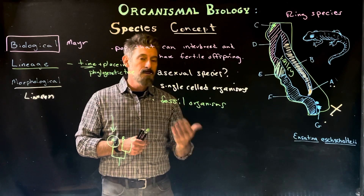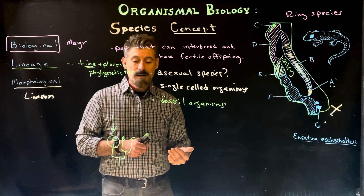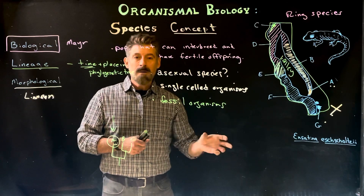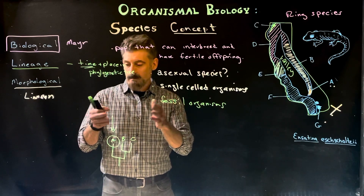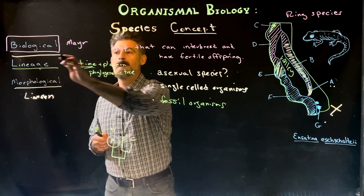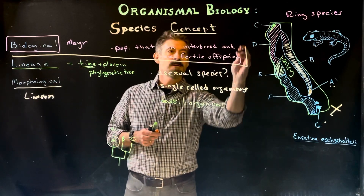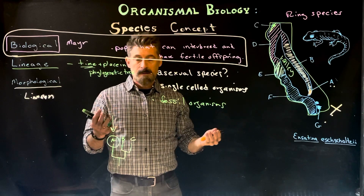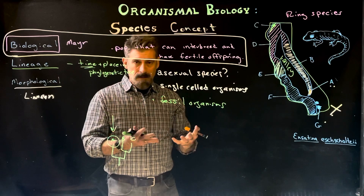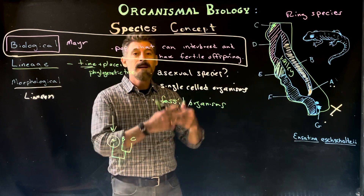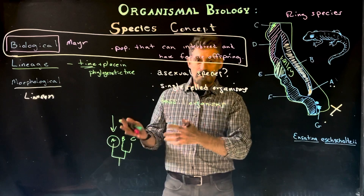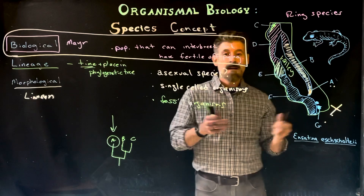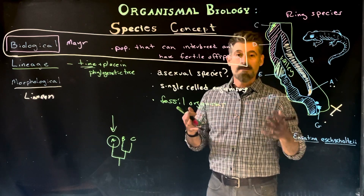Since species is a term used so much in our course and in biology, it's important for you to think about what species means and how it is defined. Generally, we are going to be mostly referring to the biological species concept, since it's the most widely accepted — that organisms within a population that can reproduce with one another and have fertile offspring are considered a species, while organisms that either cannot reproduce with one another or cannot have viable offspring are considered different species.